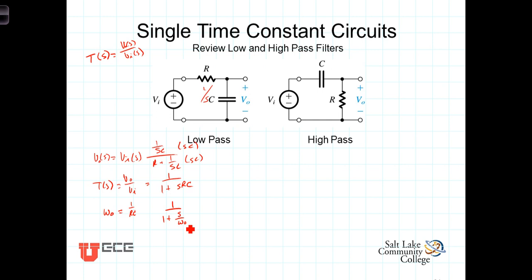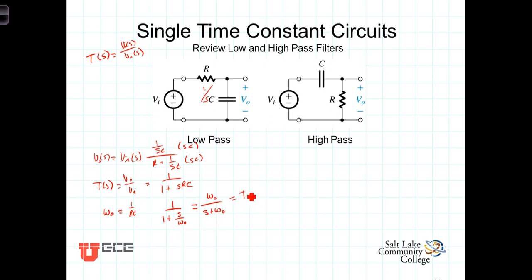Another common way of writing this is found by multiplying numerator and denominator by the cutoff frequency, giving us omega-0 over s plus omega-0. Another standard form is to put the highest power of s in the denominator with a coefficient of 1. These two forms are equivalent expressions for the transfer function T of s.